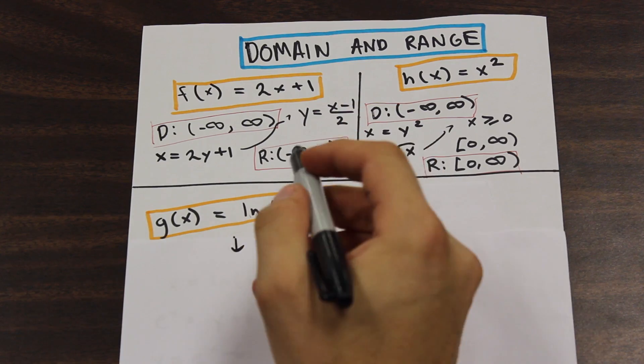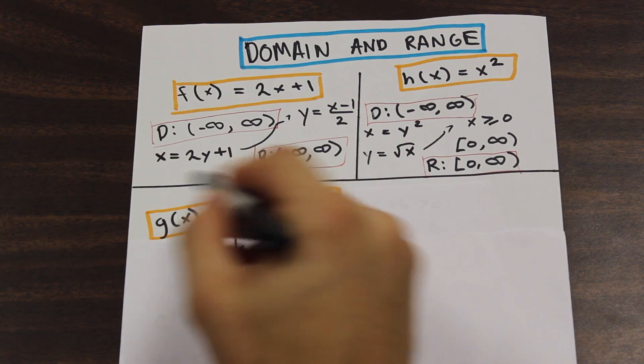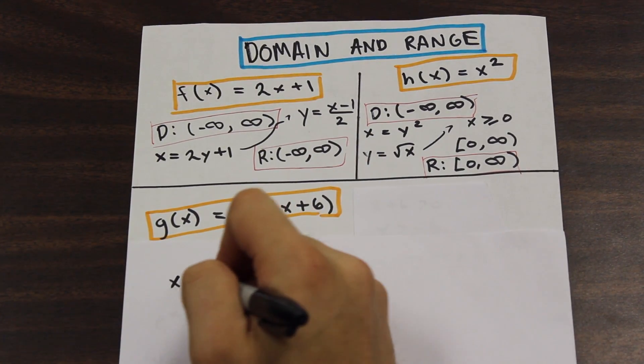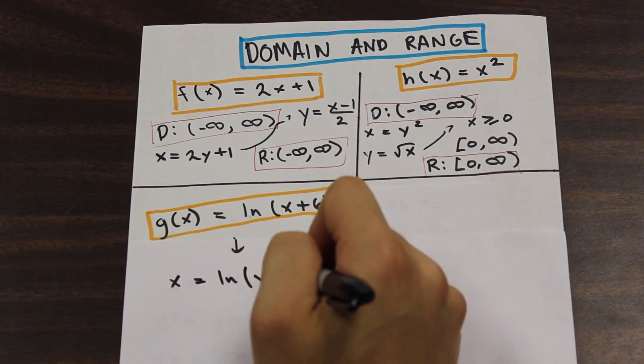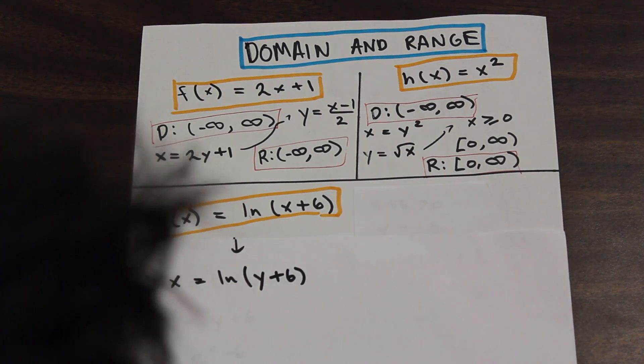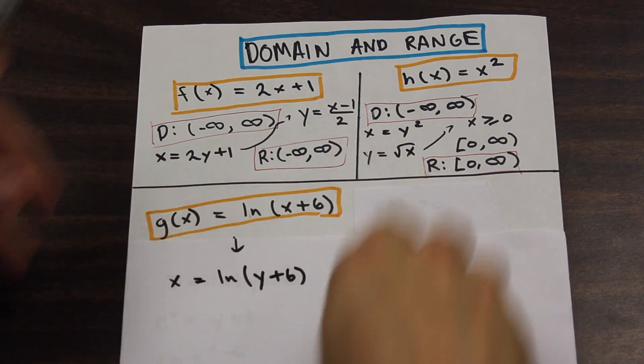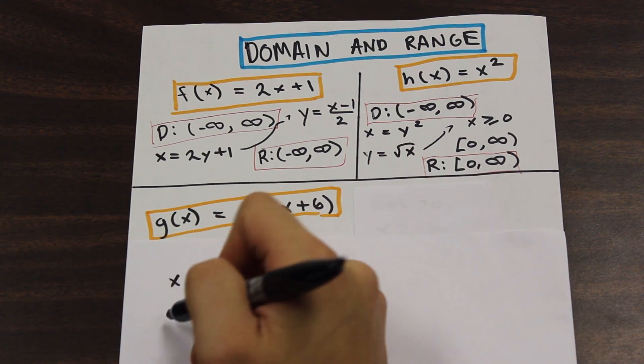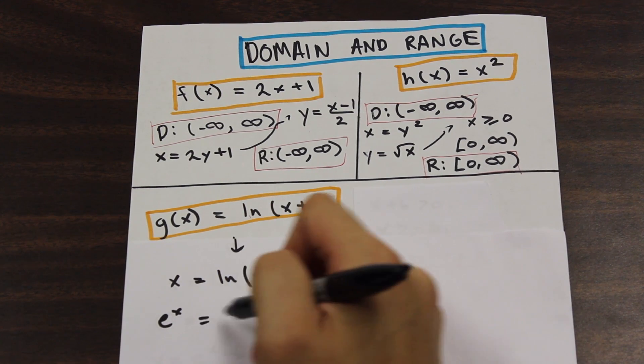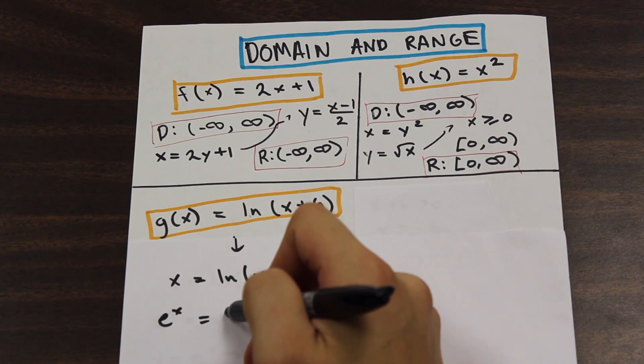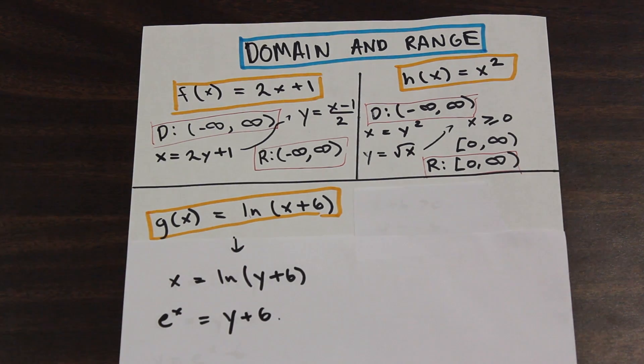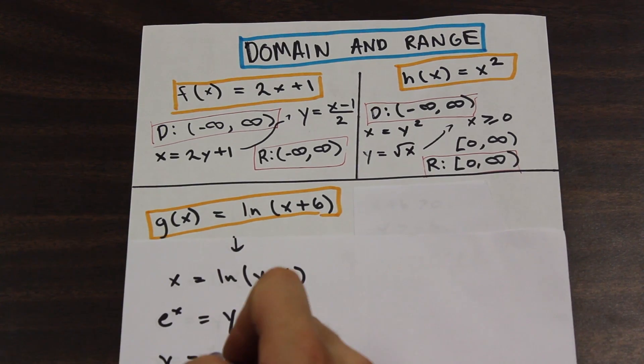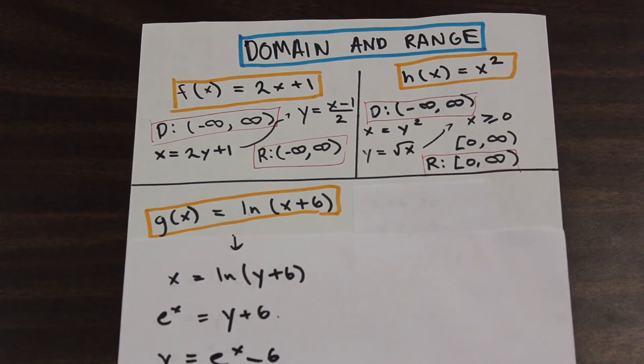So let's come down here, and we'll replace the X and the Y. So we have X equals ln Y plus 6. And what we're going to do is we're just going to take E to the entire equation. So E to the X, and then E to the ln Y plus 6, and then E to the ln is going to cancel. So E to the ln is going to cancel, and we're going to be left with E to the X equals Y plus 6. Now we just need to isolate for Y and solve.